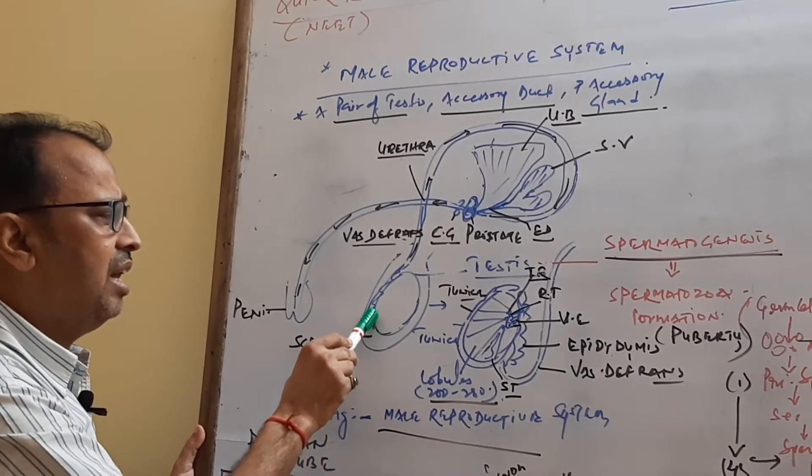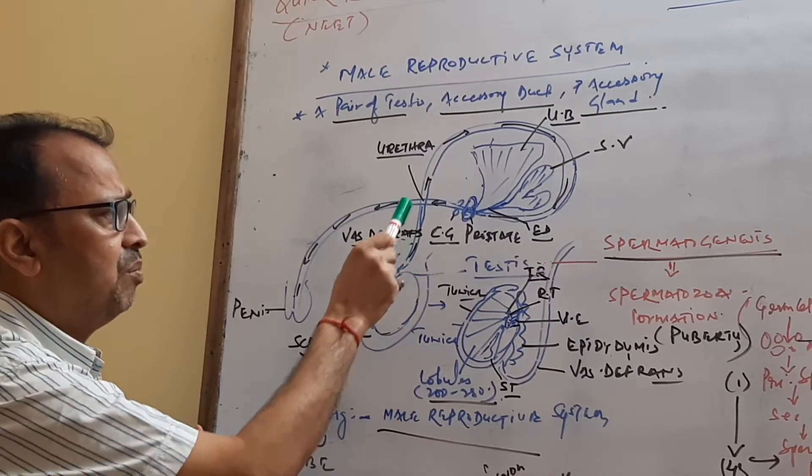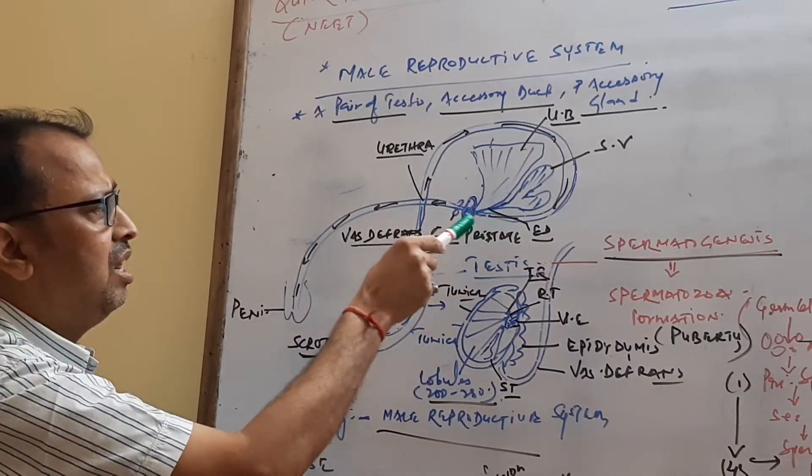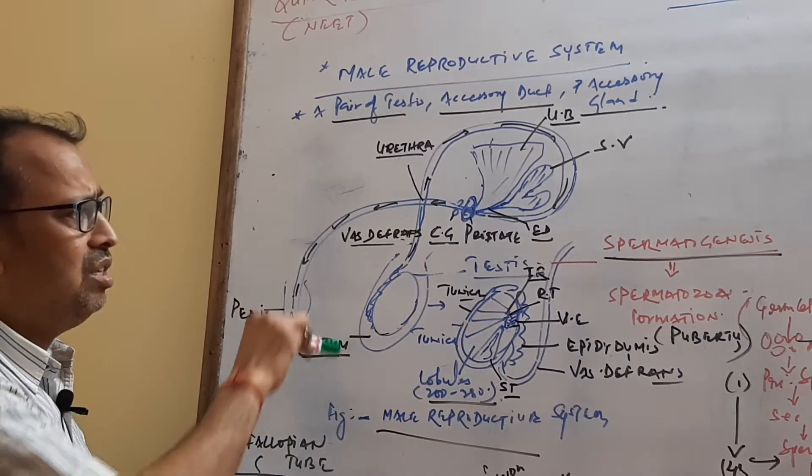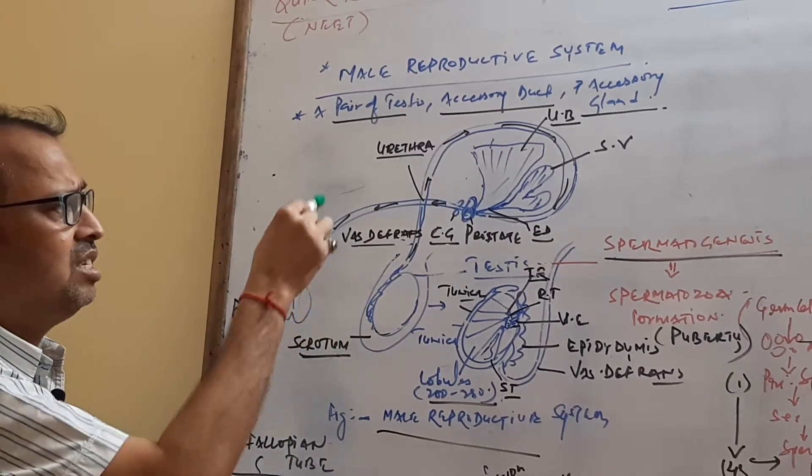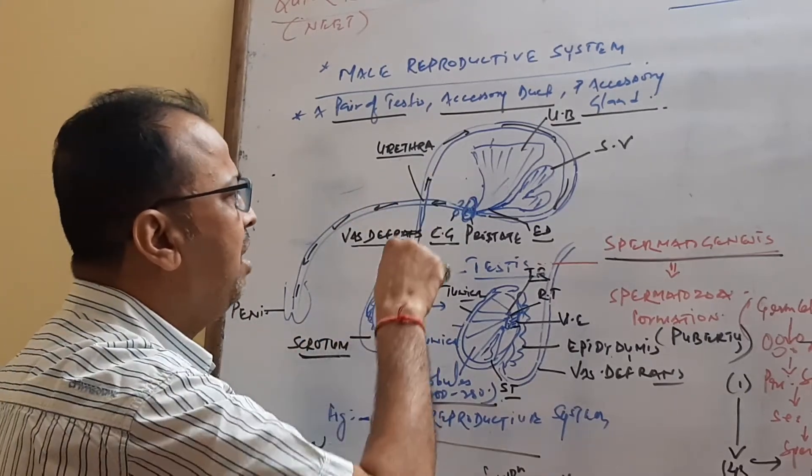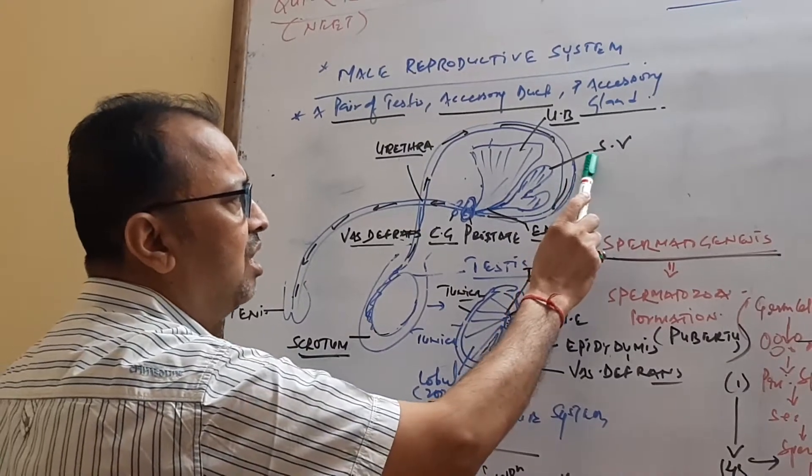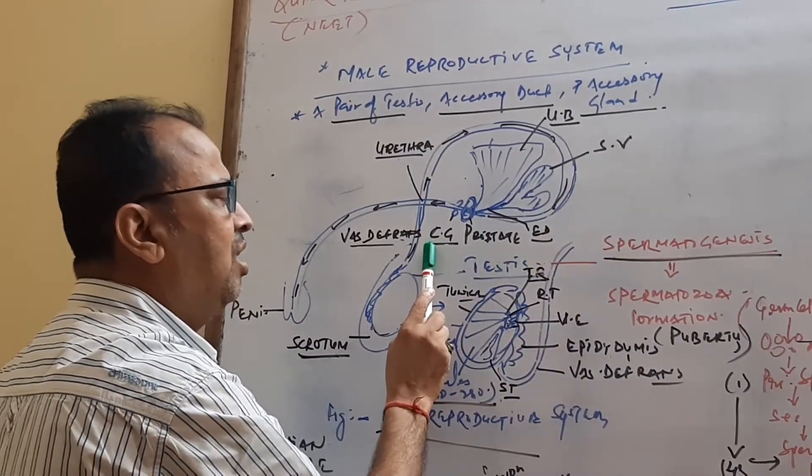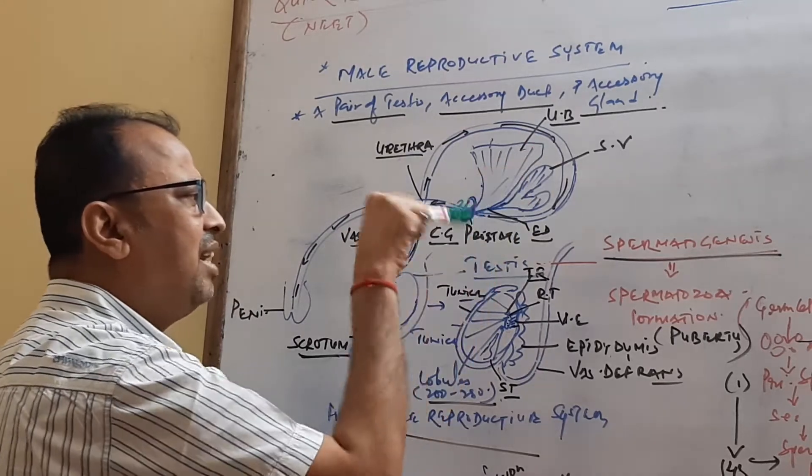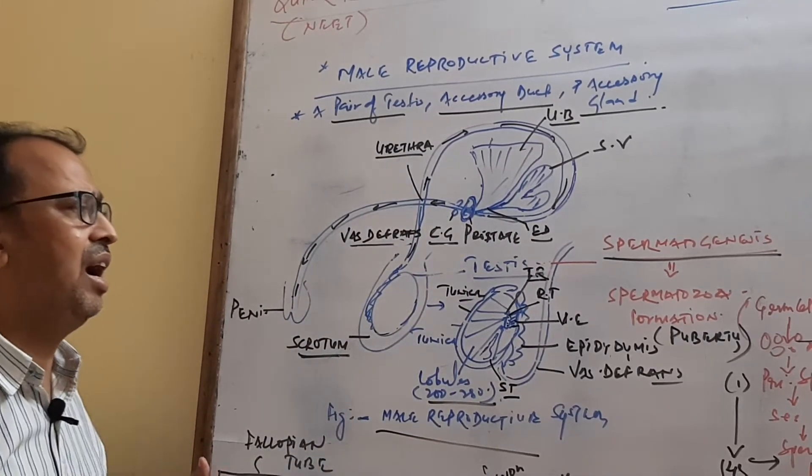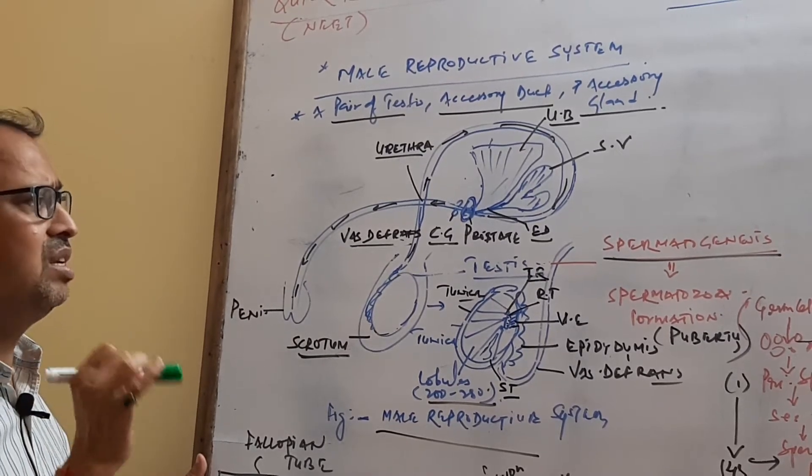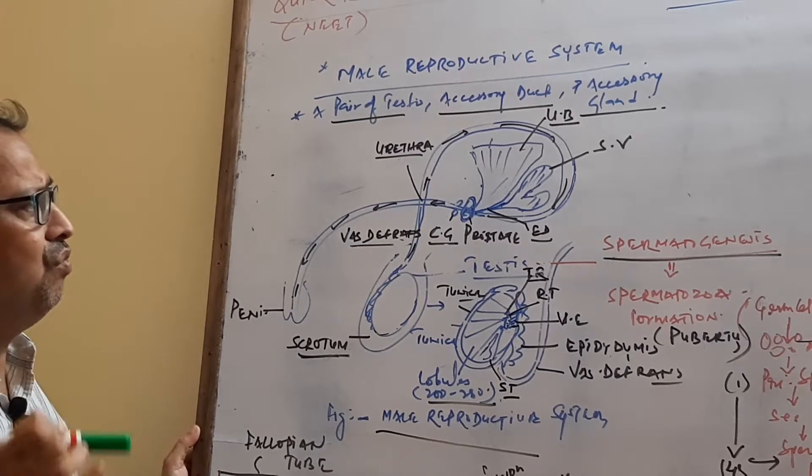Outside ducts are present. The first duct is called vas deferens, and then vas deferens connects with the urethra through the ejaculatory duct. Along with the male reproductive system and ducts, accessory glands are present. The main accessory glands are seminal vesicles, prostate, and Cowper's gland. These glands secrete a viscous substance and it combines with the spermatozoa to form semen. Semen is the spermatozoa along with fluids.